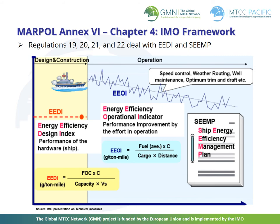MARPOL Annex 6 Chapter 4 IMO Framework. Chapter 4 — Regulation on Energy Efficiency for Ships — was developed to regulate energy efficiency of ships. It came into force in January 2013. The following regulations are specified: Regulation 19 (Application) specifies the application domain and scope of the Chapter 4 regulations. Regulation 20 (Attained Energy Efficiency Design Index — Attained EEDI) specifies the requirements on attained EEDI, including the calculation processes and survey and verification aspects.